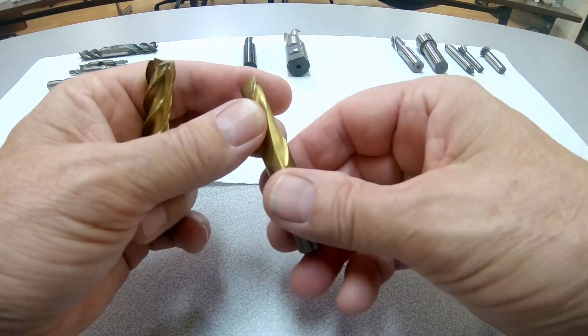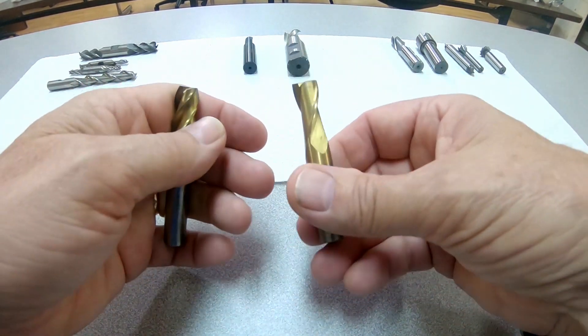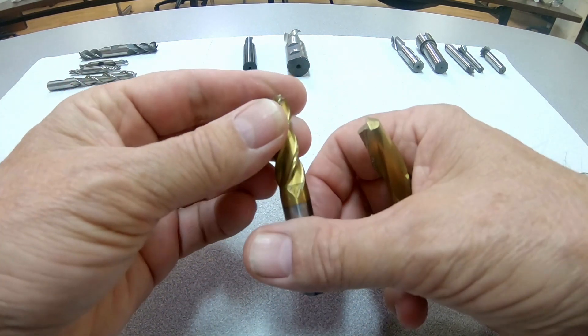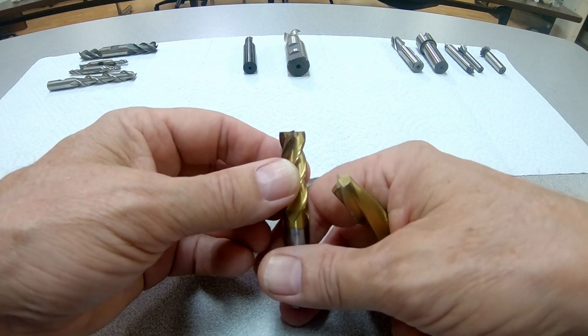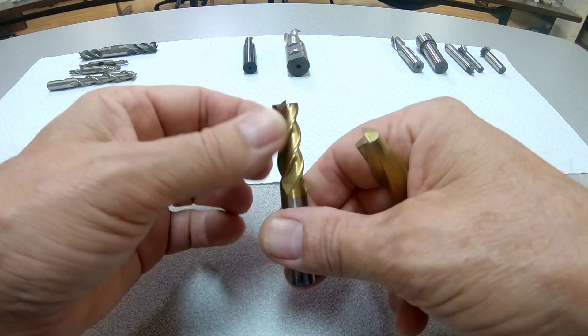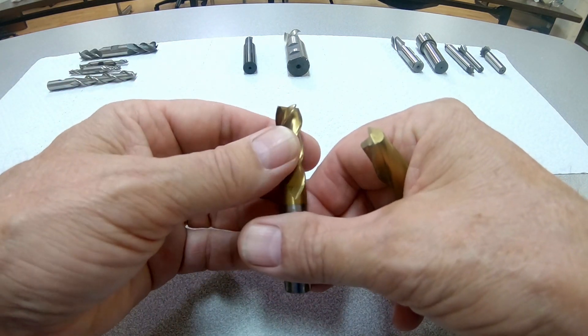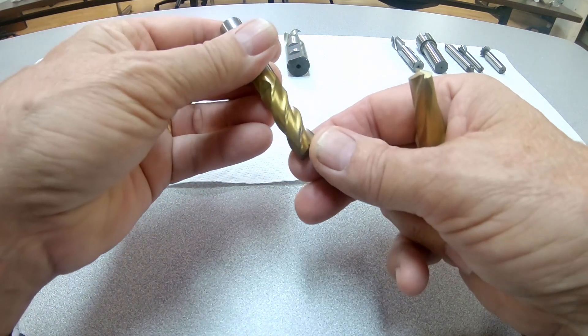That being said, if I'm going to do a deep slot, I'll use the two flute. If I'm going to do a shallow slot like you'd use for a keyway for a shaft or something like that, for a key to hold a pulley on, those tend to be rather shallow and I would prefer the four flute.